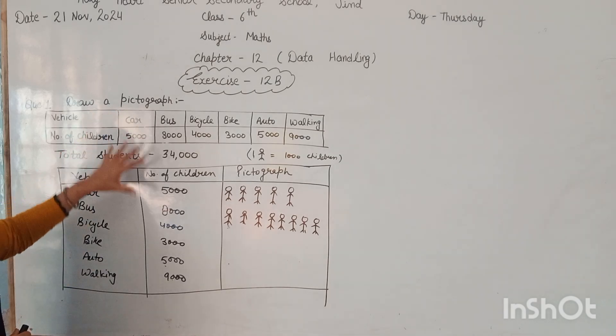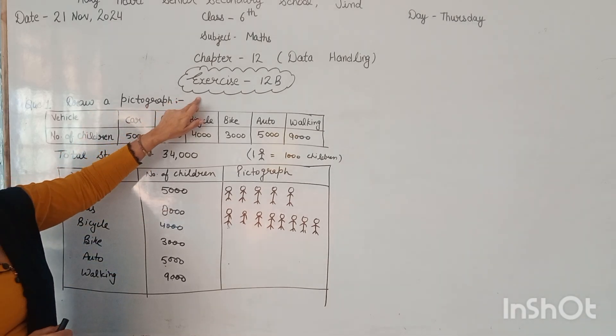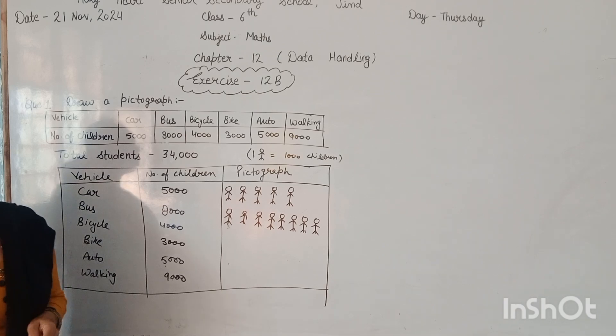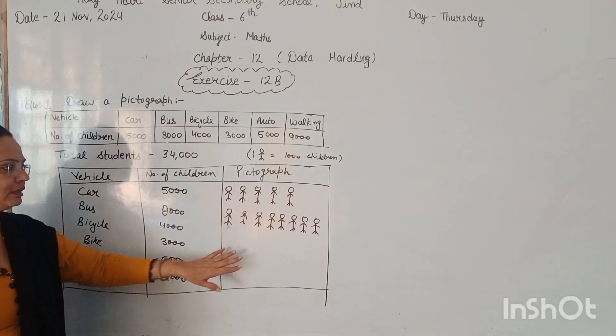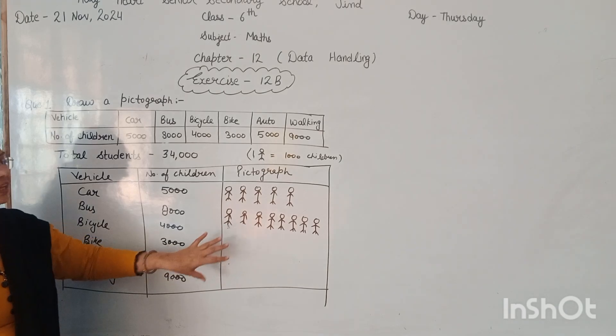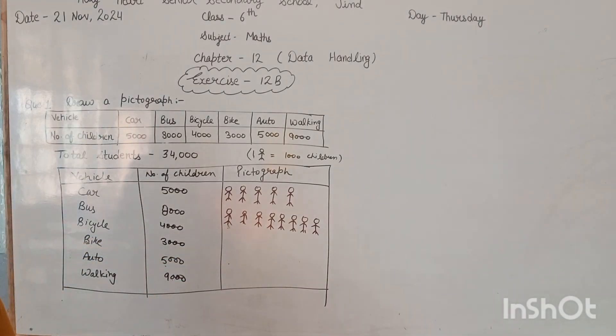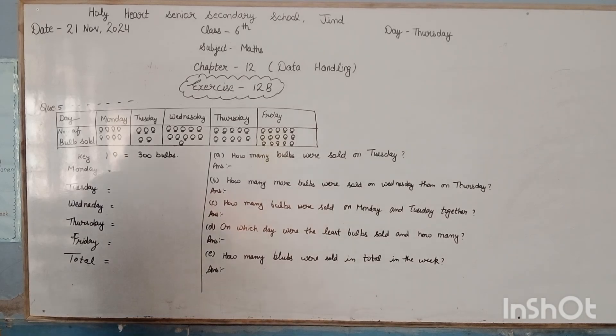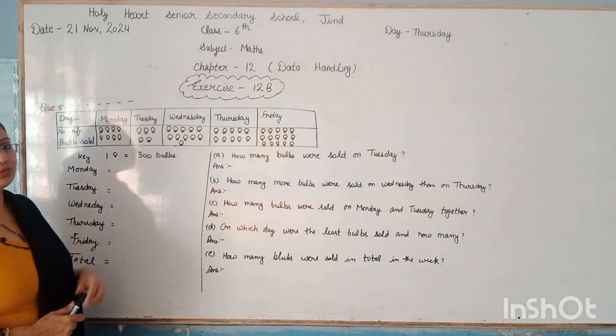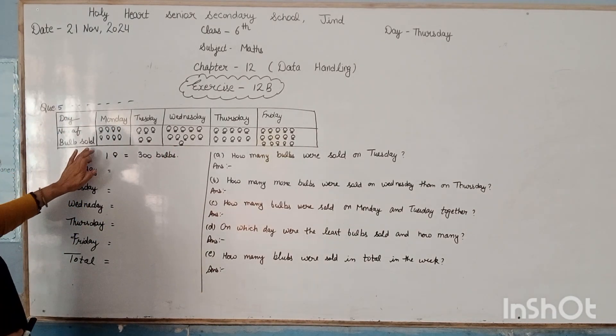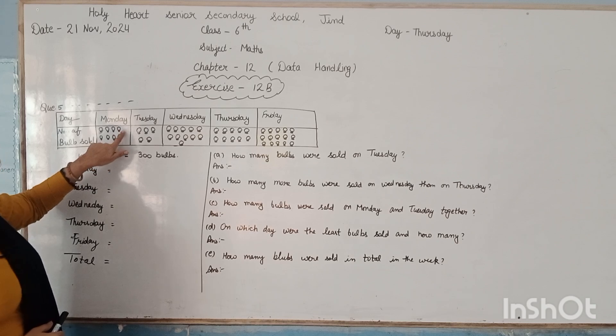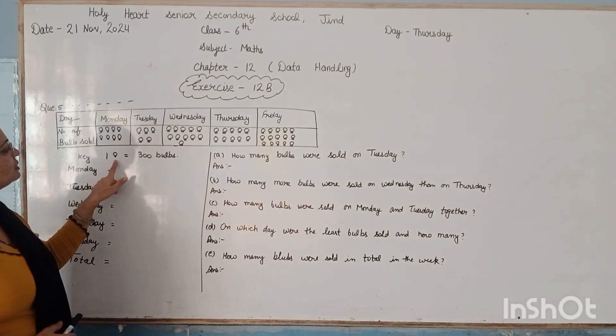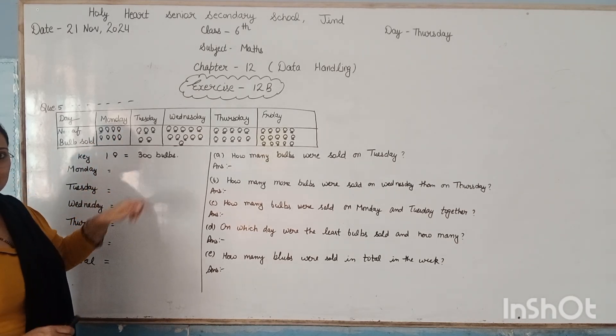On the behalf of this, you have to completely solve this exercise 12B, and if there are some problems, when they give you any pictograph, they give you some questions and you give the answer according to this. Now in question number 5, they give you this type of table: day and number of bulbs sold. On Monday, there are 8 symbols, and each symbol represents 300 bulbs.